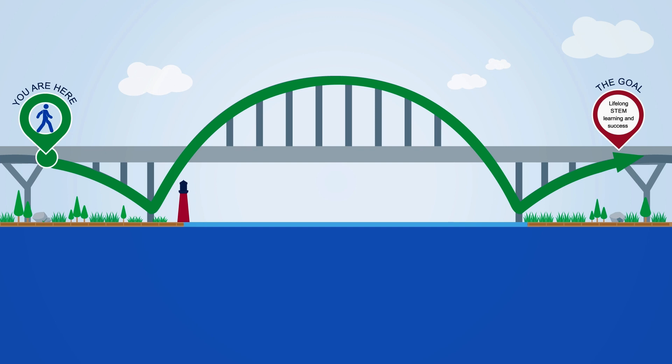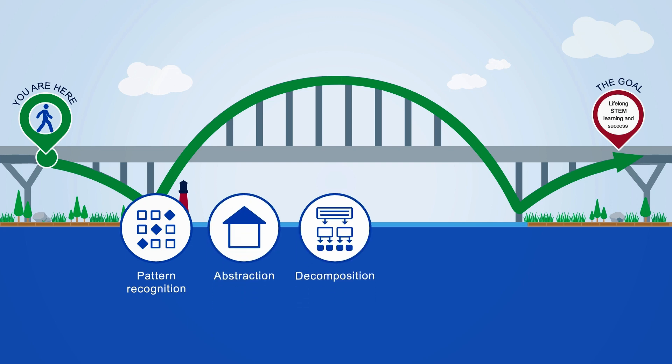Computational thinking involves five main strategies: pattern recognition, abstraction, decomposition, debugging, and algorithms.